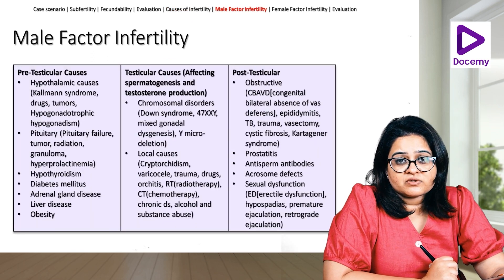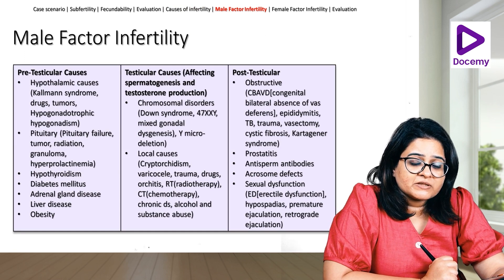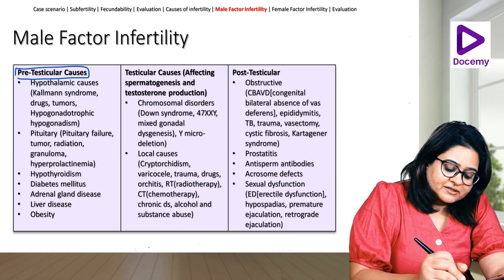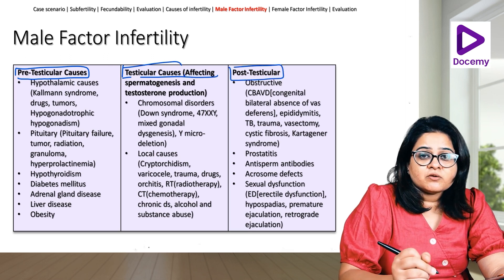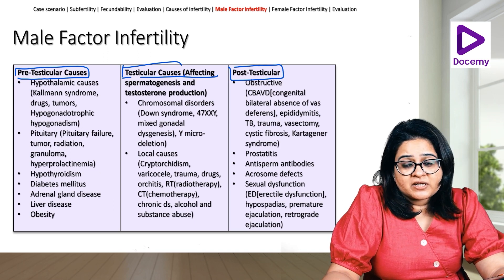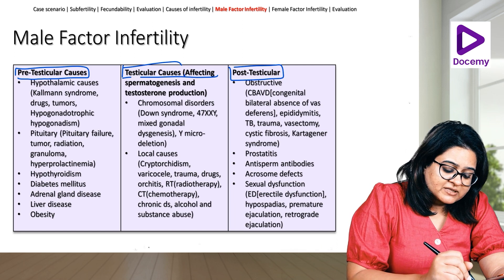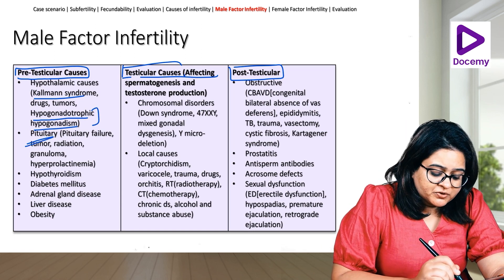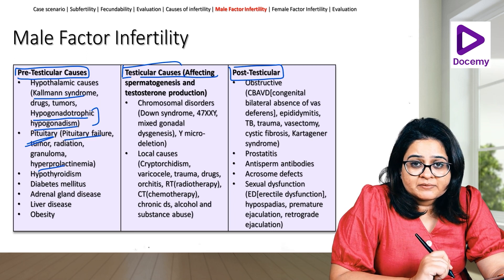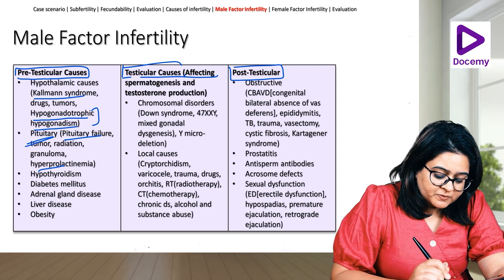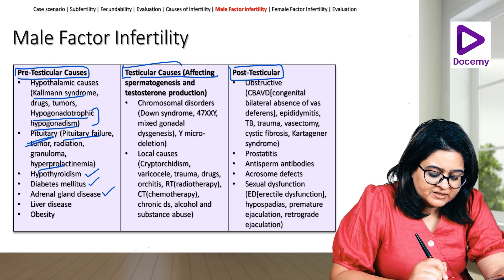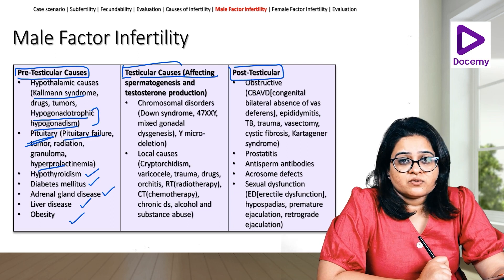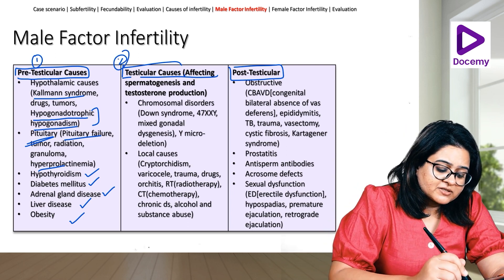When we talk about male factor infertility, we divide the causes as pre-testicular, testicular, and post-testicular. Pre-testicular causes mean the cause is somewhere in the hypothalamus or pituitary — for example, Kallmann syndrome causing hypogonadotrophic hypogonadism, pituitary failure, or hyperprolactinemia. Other pre-testicular causes include hypothyroidism, diabetes mellitus, adrenal disease, liver disease, and obesity, all of which are known to affect spermatogenesis.